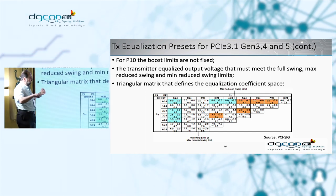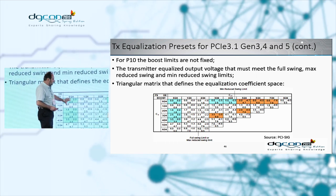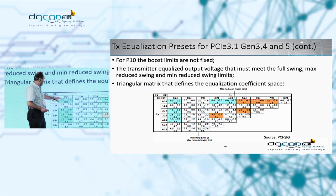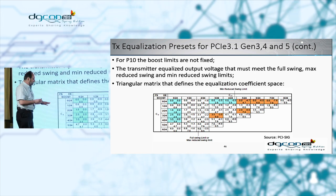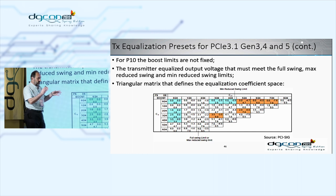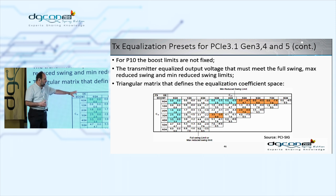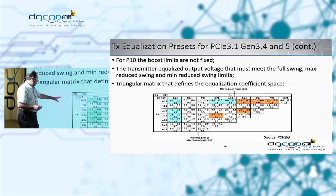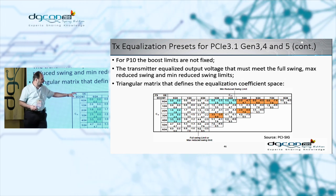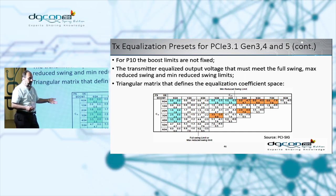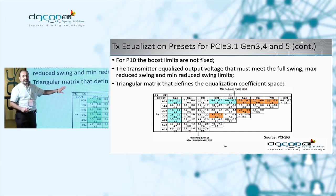The PCIe Gen 3 specification defines a triangular type of matrix for preset 10 due to constraints on the transmitter output signal, providing more combinations of tap coefficients and a somewhat larger equalization space. This complexity is specific to PCIe — you won't see this type of complex transmitter equalization elsewhere.